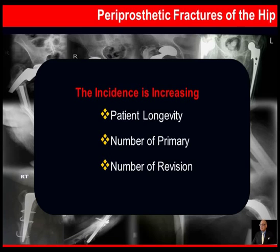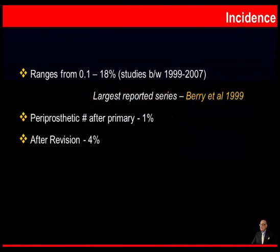If we look at the incidence, in various reported studies it ranges from 0.1% to 18%. The largest reported series is by Berry et al. 1999, in which they quoted an incidence of 1% for primary hip replacement and a fourfold increase after a revision procedure.